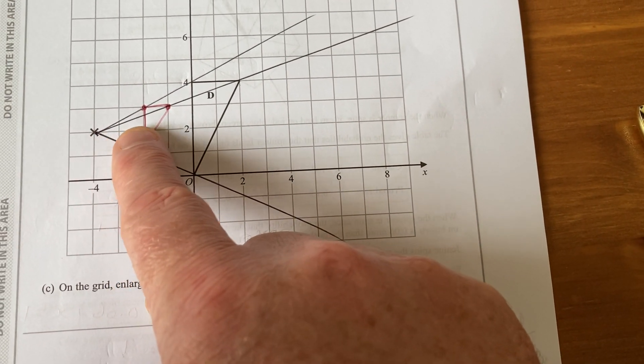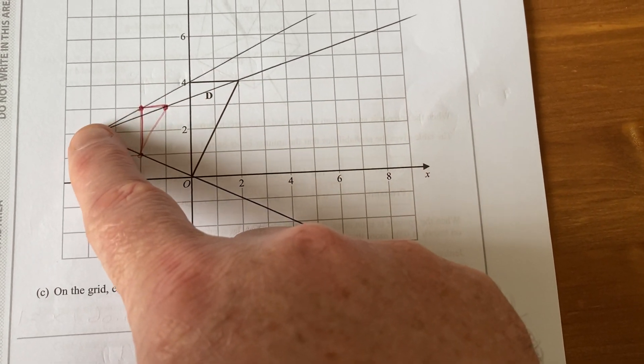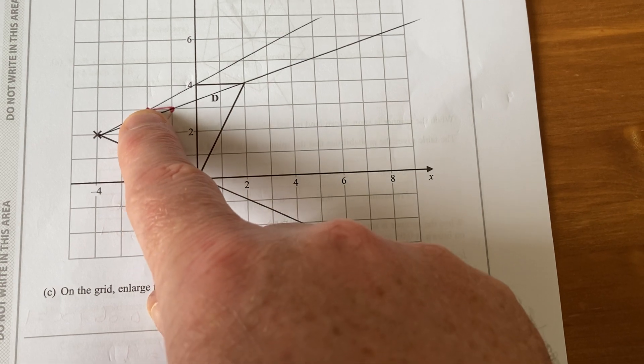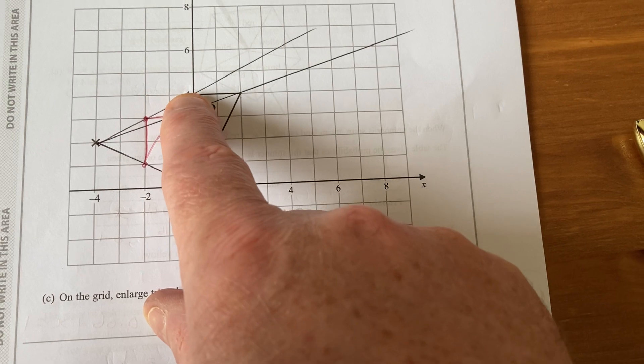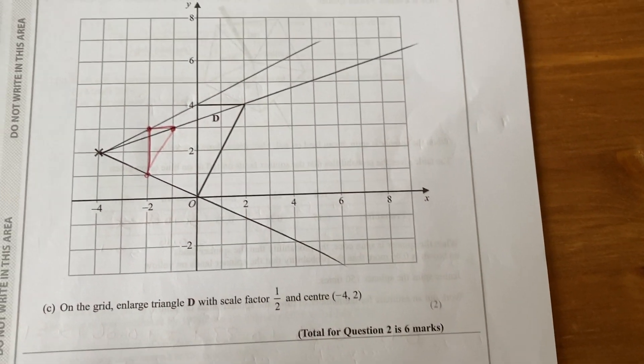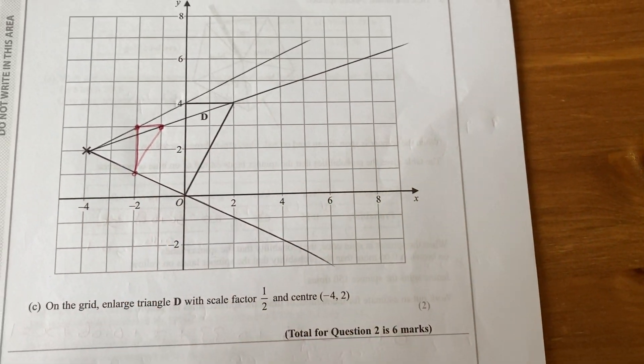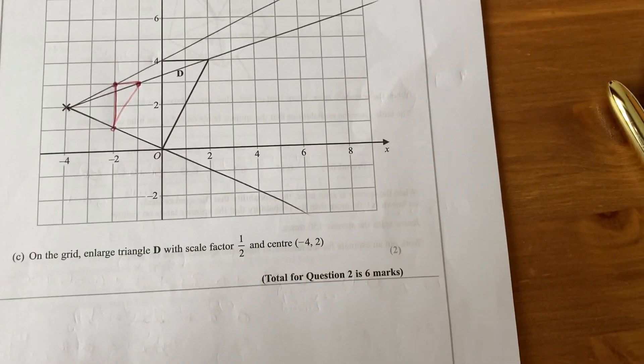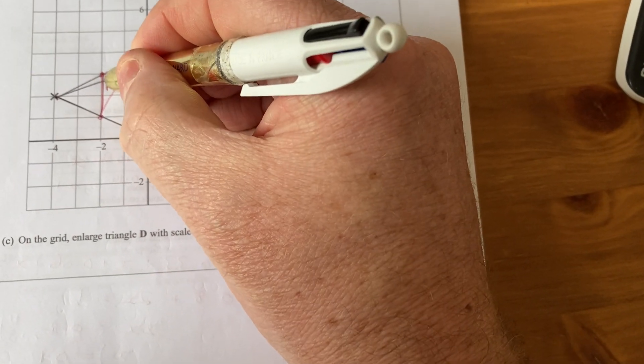So originally this one was one, two, three, four and one, two. Now it's one, two, one. So it halves the distance both directly there, but also the horizontal and vertical distances are halved as well. So do that for each of the three corners, and then you end up with shape D being the red shape just there.